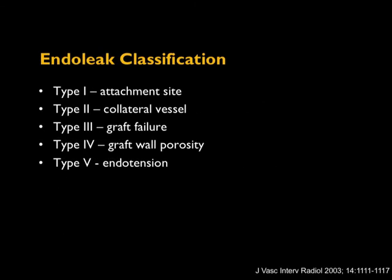Endoleaks are probably the most common problem we'll see in patients who've had endovascular repair. Of the various types, type 2 is the most common. There are five different types described. Type 4 — called graft wall porosity — only occurs at the time of stent placement and is not clinically important. The contrast leaks out through the porous graft wall initially but that porosity resolves over time. We do care about types 1, 2, 3, and 5.